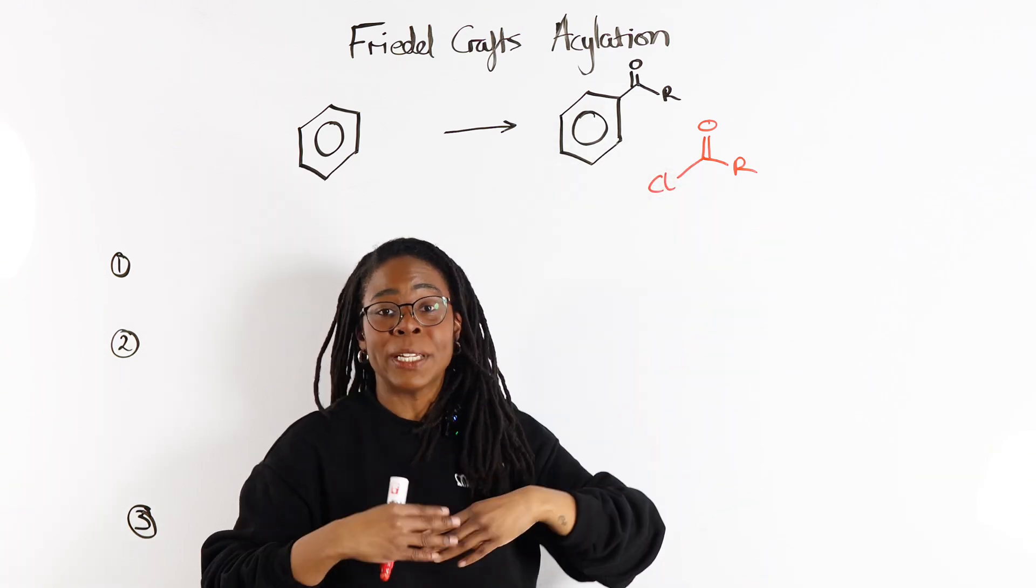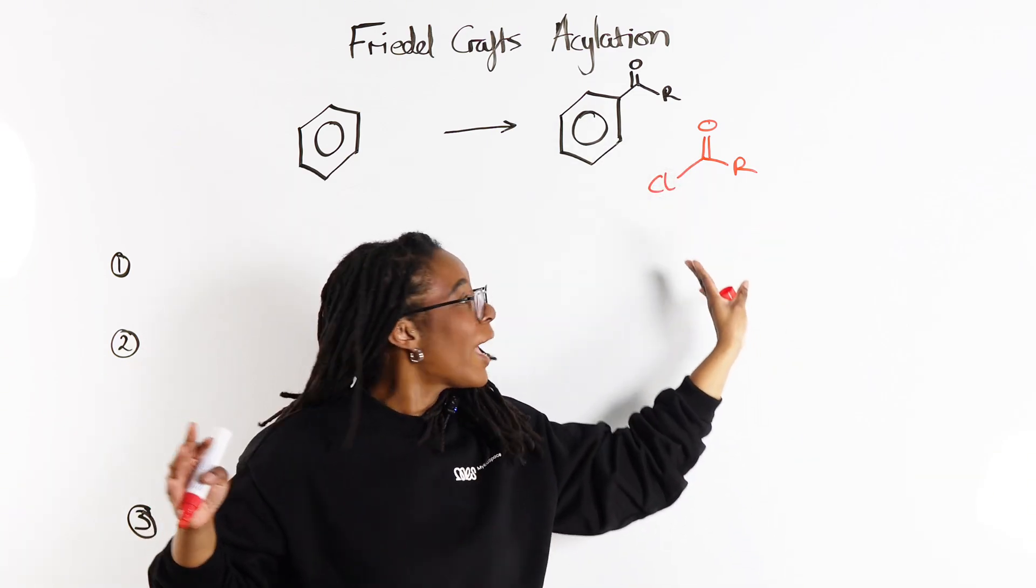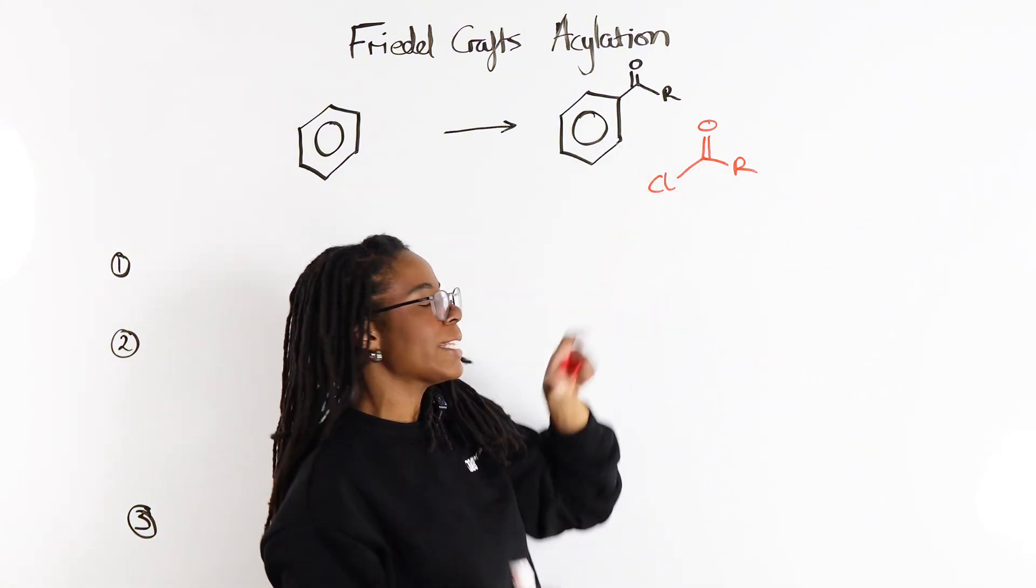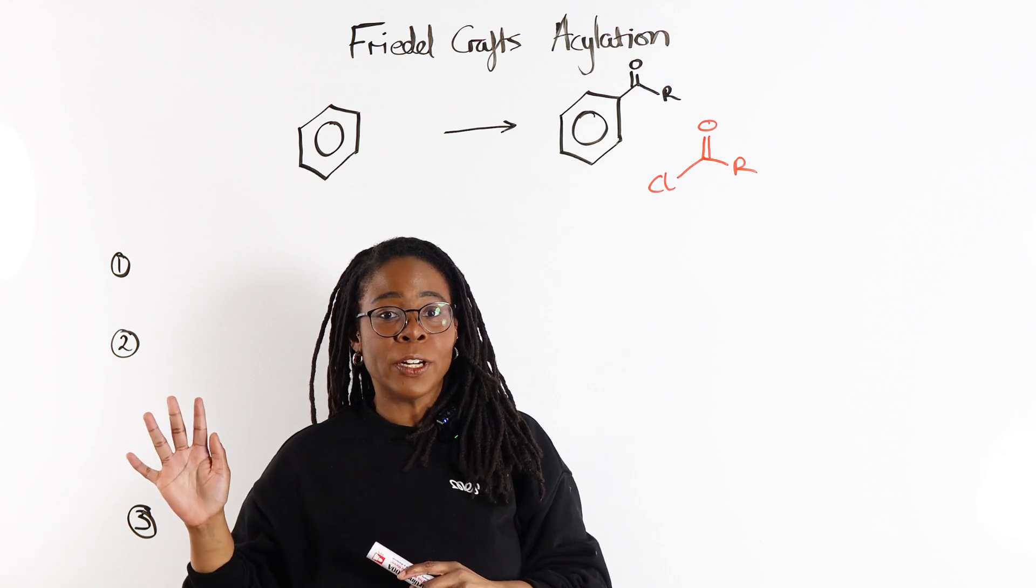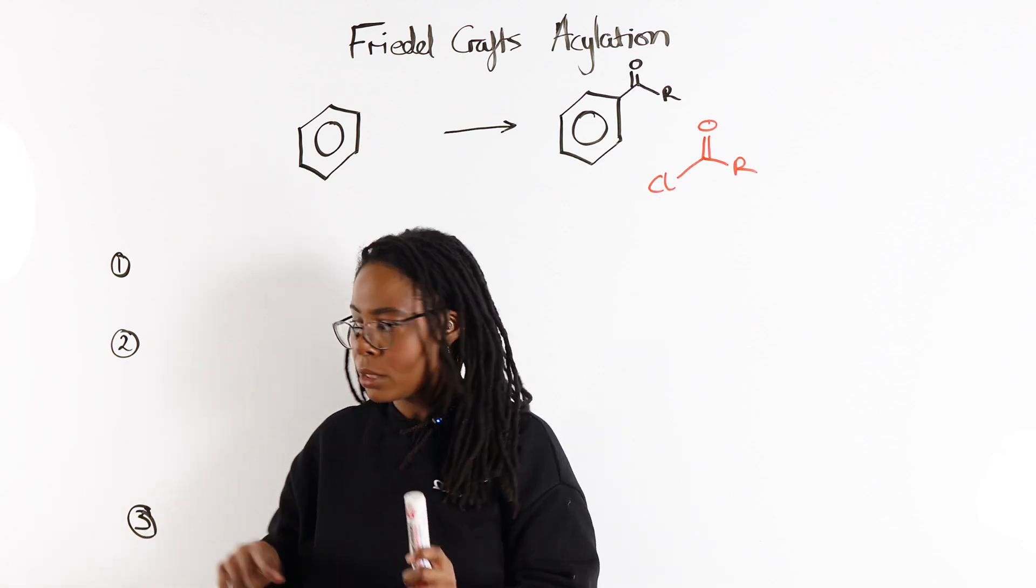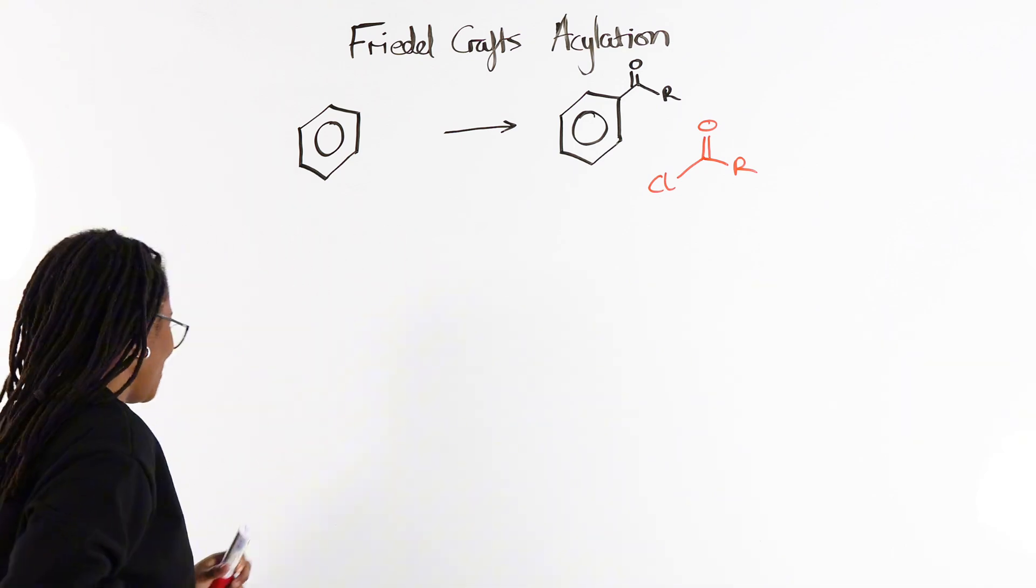The R-group could be whatever length of carbon chain, whatever else is happening doesn't really matter. The key part is this acyl chloride part. So when it comes to our electrophilic substitution mechanisms, we split those up into three main parts, which I have started to prepare earlier.